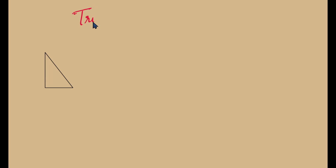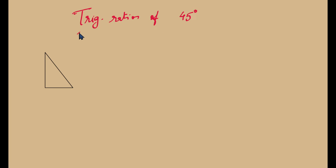Hello everyone. Let us find the trigonometric ratios for the 45 degree angle. We previously found the trig ratios for sin 0°, sin 90°, cos 0°, cos 90°, tan 0°, and tan 90°. This video talks about the trigonometric ratios for the 45 degree angle.